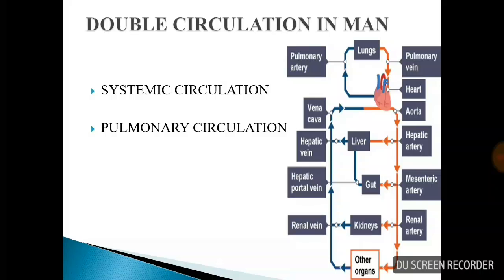Pulmonary circulation: deoxygenated blood is collected from body parts and sent to the heart. The heart then sends it through the pulmonary artery to the lungs, where it gets oxygenated. This process is pulmonary circulation. The pulmonary artery carries deoxygenated blood to the lungs.